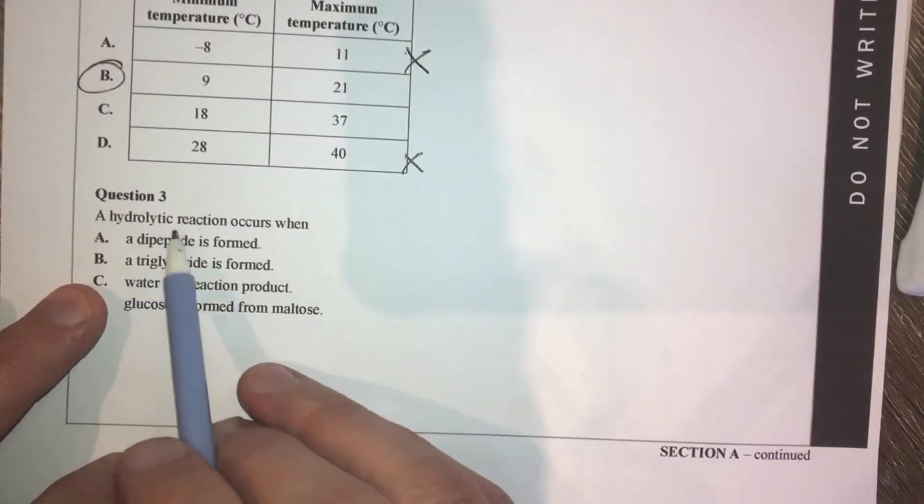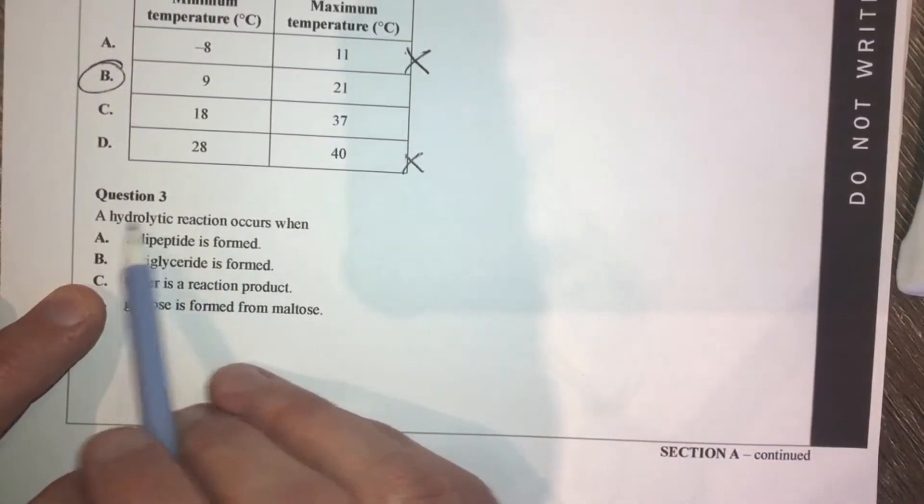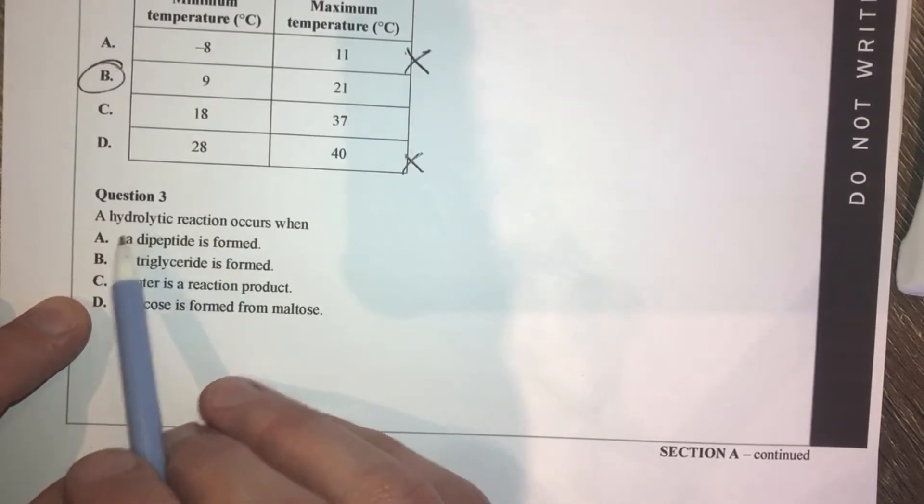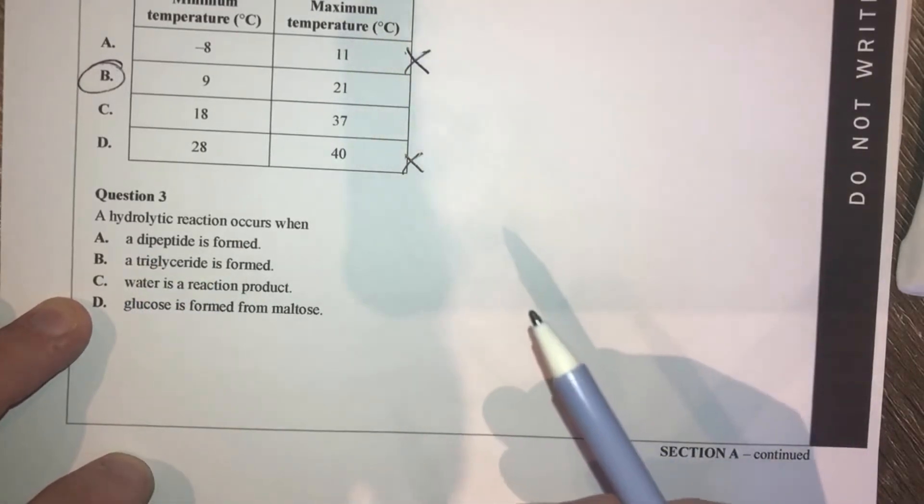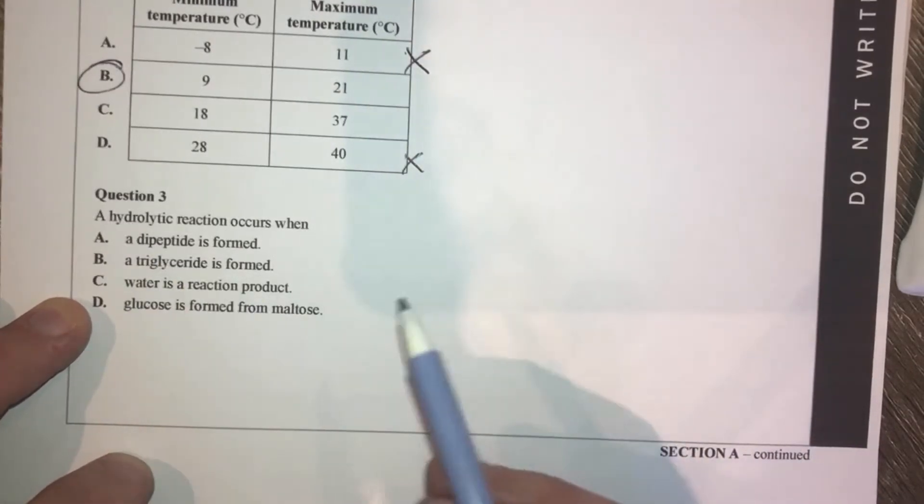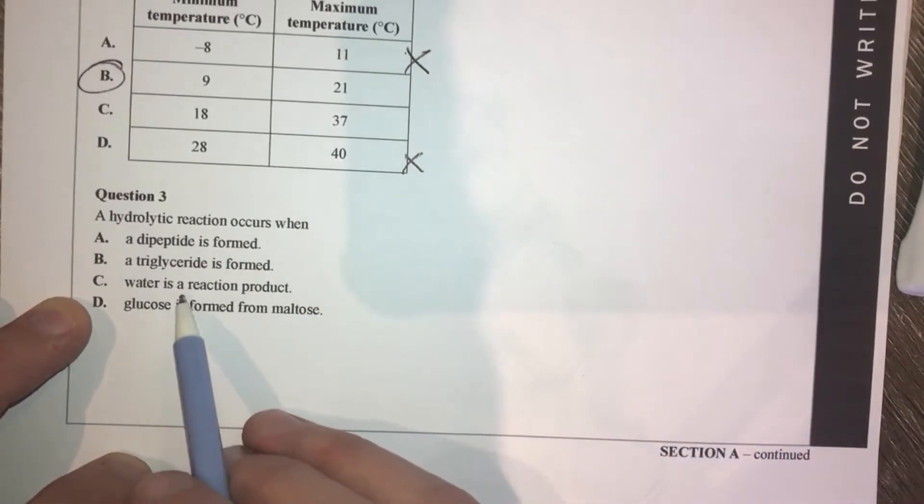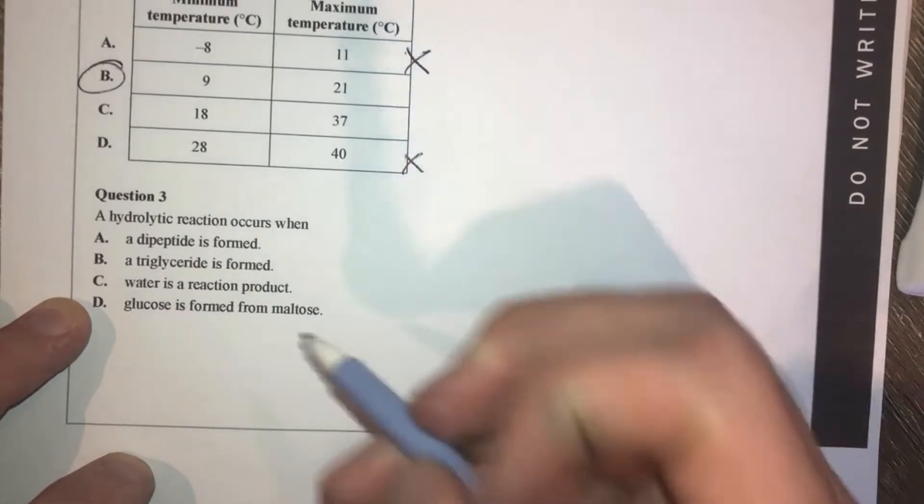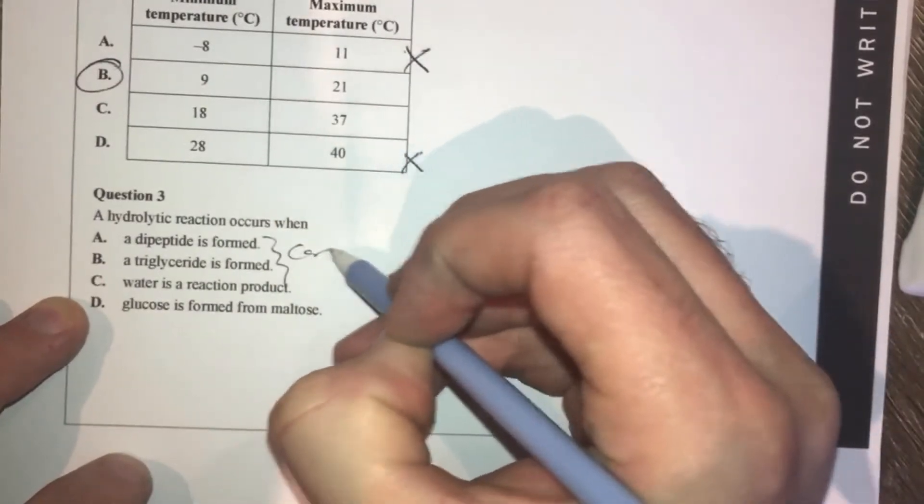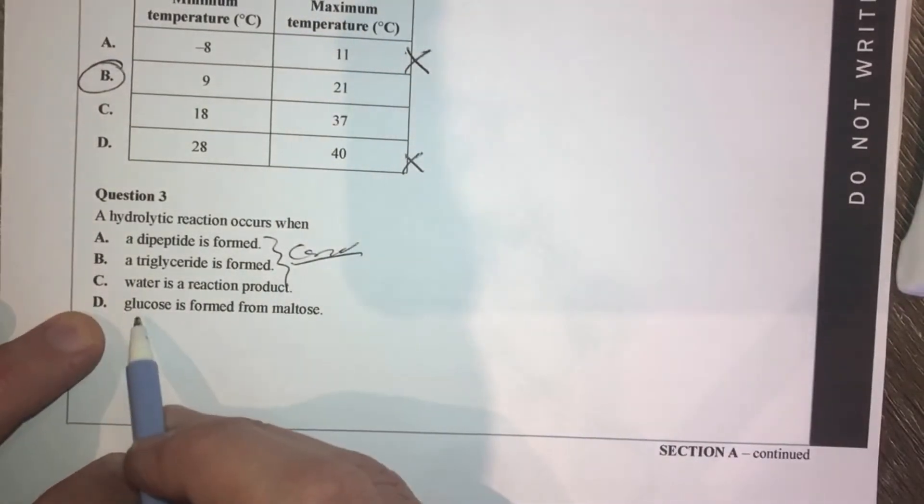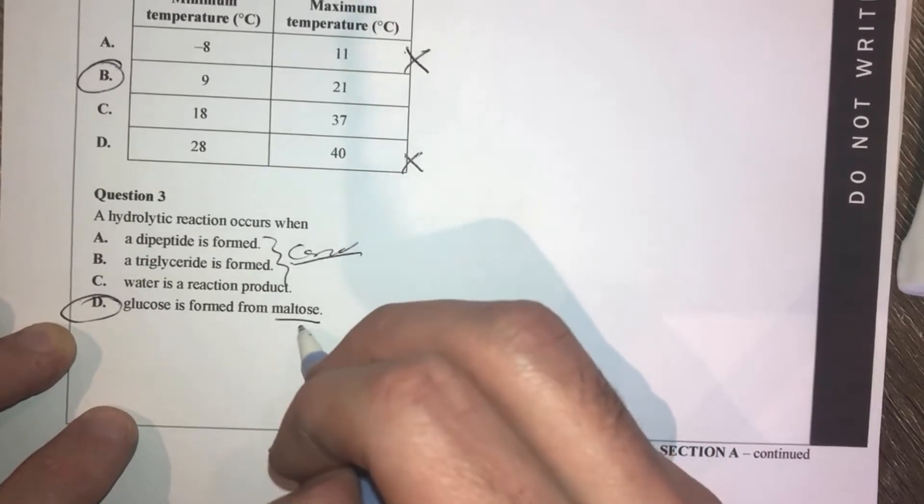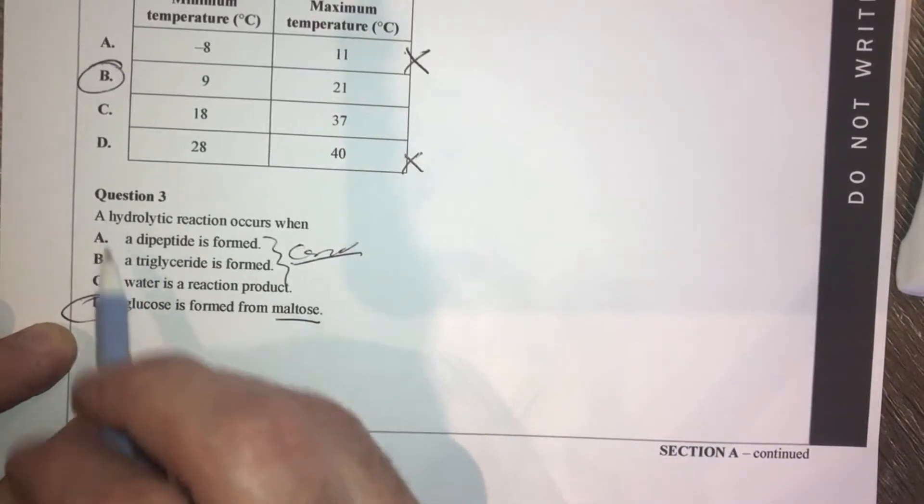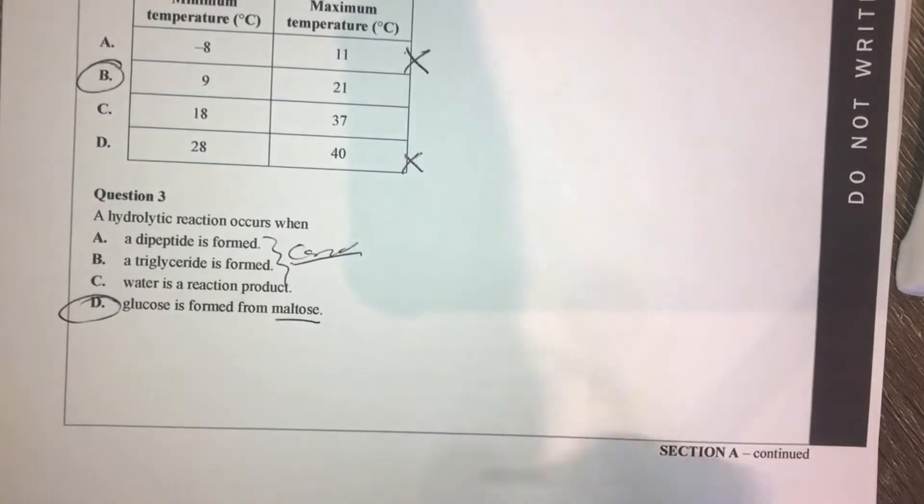Question 3, a hydrolytic reaction. Hydrolytic, I haven't really heard that word much before. Sounds like hydrolysis to me, so let's have a look at what the answers could be. We've got a dipeptide is formed - that's a condensation reaction. Triglyceride is formed - again, another condensation reaction. Water is a reaction product - that's condensation. So all those three seem to me like condensation, which would suggest that glucose being formed from maltose. That's the correct answer there. I know that this is actually the breakdown of a disaccharide, so this is hydrolysis.